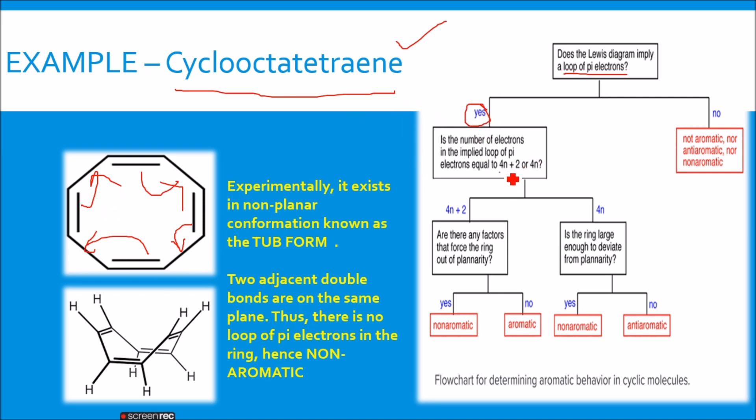Now ask the next question: whether it obeys 4n plus 2 or 4n rule? Here you have totally 4 pi bonds. So it is 8 pi electrons. 8 pi electrons represents a 4n system. That is, 4 times 2 is 8. So you have a 4n system.